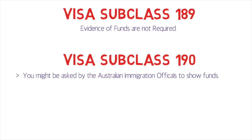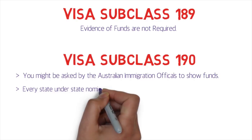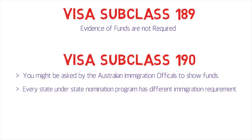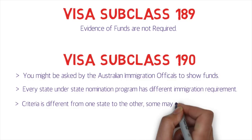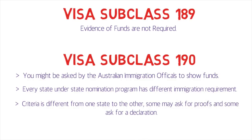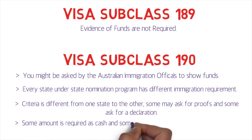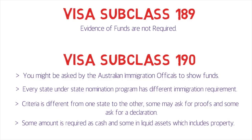Every state under the state nomination program has different immigration requirements. The criteria is different from one state to the other — some may ask for proof of funds and some might ask just for a declaration. Some amount is required in cash and some in liquid assets, which also includes property, so you might have to furnish property papers to prove that. Let's check out visa subclass 190 for different states.